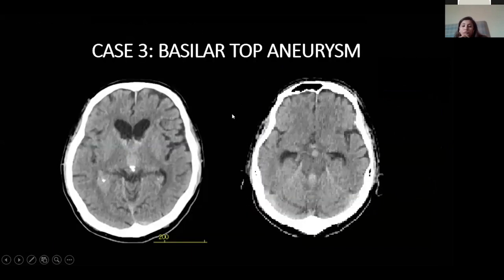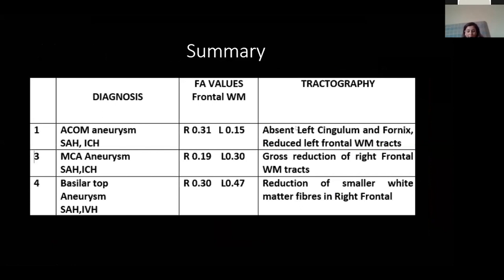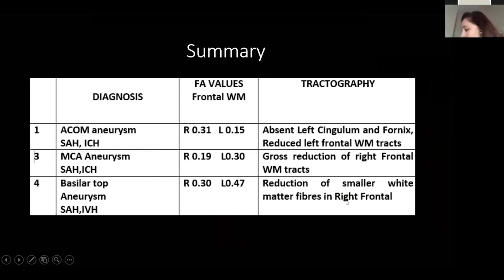Case three was a basilar top aneurysm patient who walked into the OPD and collapsed — a grade 4 SAH with IVH. The patient underwent coiling embolization. Post-operatively, GCS showed mild confusion and borderline disorientation. Imaging picked up a very small hematoma, probably EVD insertion-related, and tractography showed a very minor disruption of fibers — yet this accounted for his memory disturbances and disorientation. In summary: in the AComA case, the cingulum and fornix were affected; in MCA, gross disruption of the right frontal forebrain bundle; and in the basilar top case, subtle disruption in the right frontal white matter fibers caused confusion. There was a corresponding decrease in fractional anisotropy values in all cases.